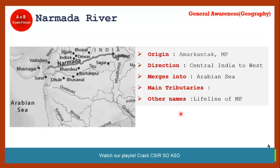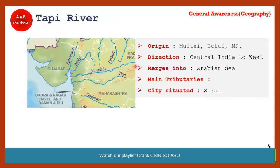The next river is Narmada, which is the lifeline of Madhya Pradesh. It flows from central India to the west. Importantly, Narmada and Tapi do not form any delta — they form estuaries instead. The origin of Narmada river is Amarkantak.